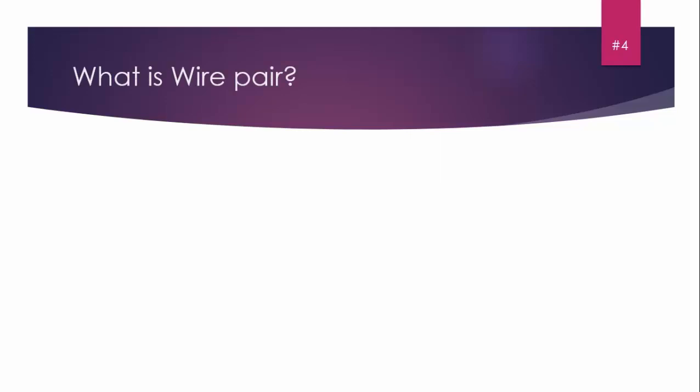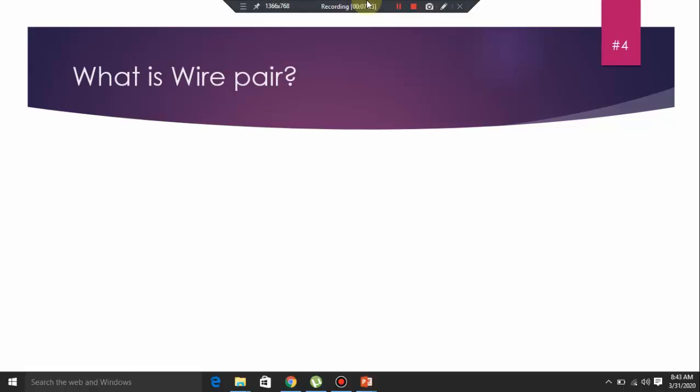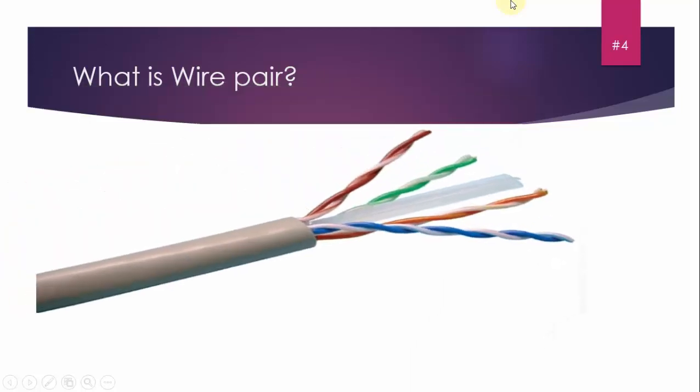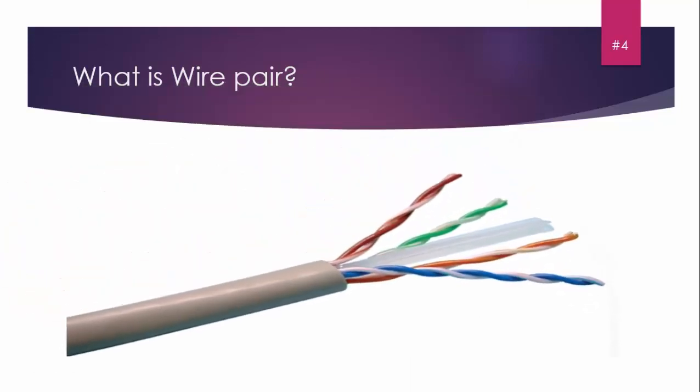Question number four: What is wire pair? Wire pair means a wire that contains a pair of cables inside. You can see this in the diagram. This is a two-mark question, so you need to define it properly.